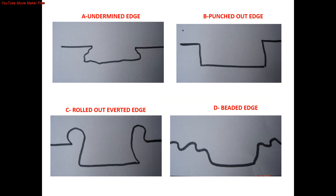I have drawn schematic diagrams to show the edges of an ulcer, which can be a pointer to the type of ulcer. A: Undermined edge — here the ulcer destroys subcutaneous tissue faster than skin or mucosa, so there is an undermining. Example: tuberculous ulcer. B: Punched-out edge — here the edge drops down at a right angle to the surface. Example: gummatous ulcer.